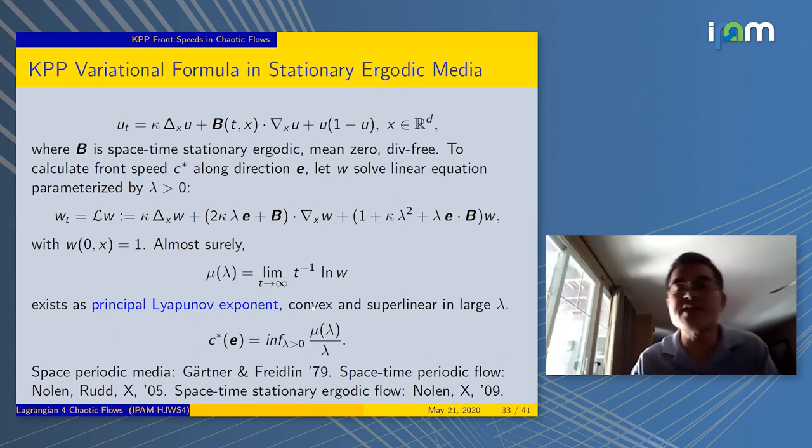The story is that if you start with anything positive, for example 1, you evolve long enough and take a log divided by t. This has an almost sure limit. It's also called the principal Lyapunov exponent. It turns out it's convex and superlinear in large λ. Then you can minimize this quantity λ μ over λ. That gives you the front speed. That's the corrector problem.